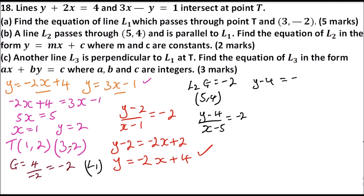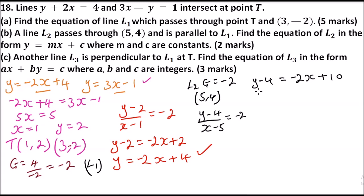Cross-multiplying gives y minus 4 equals negative 2x plus 10. Taking negative 4 across the equal sign makes it positive, so y equals negative 2x plus 10 plus 4, which gives y equals negative 2x plus 14. That is the equation of line L2 in the form y equals mx plus c.